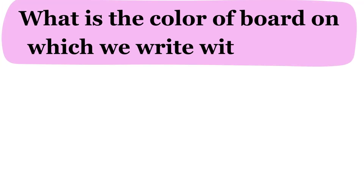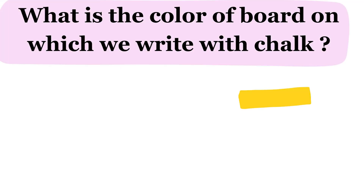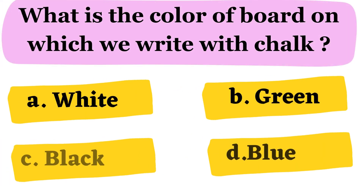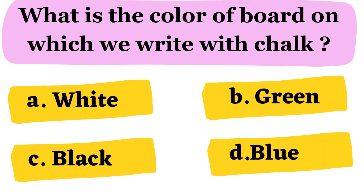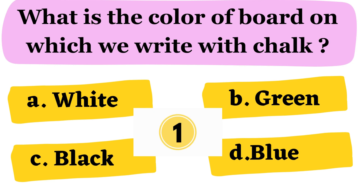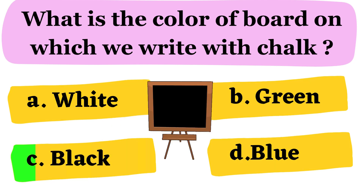Next question. What is the color of a board on which we write with chalk? A. White B. Green C. Black D. Blue. The correct answer is option C. Black.